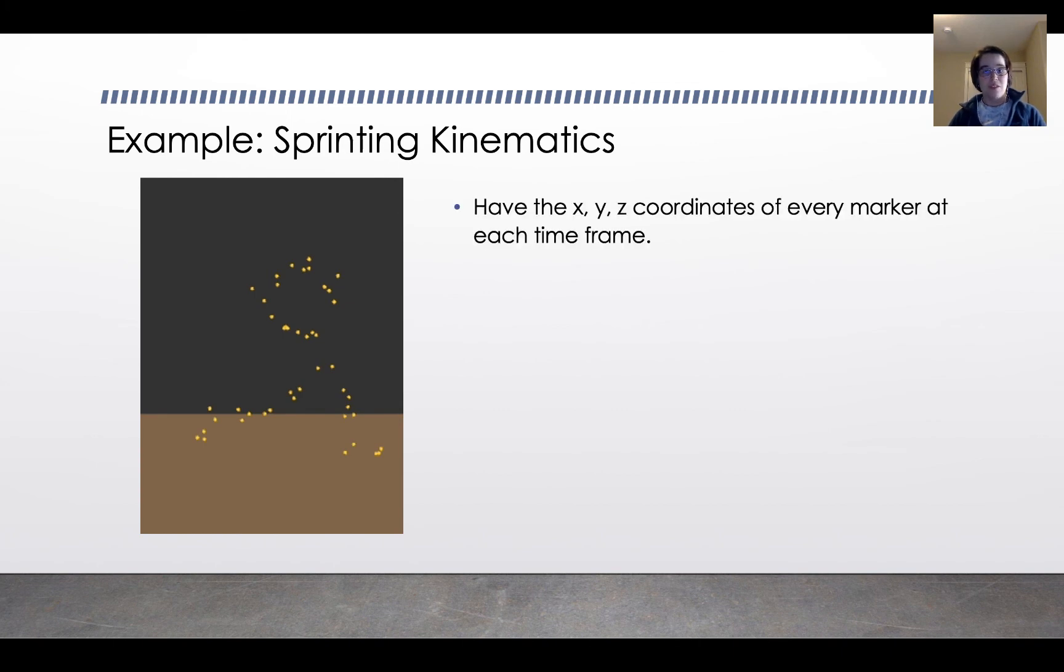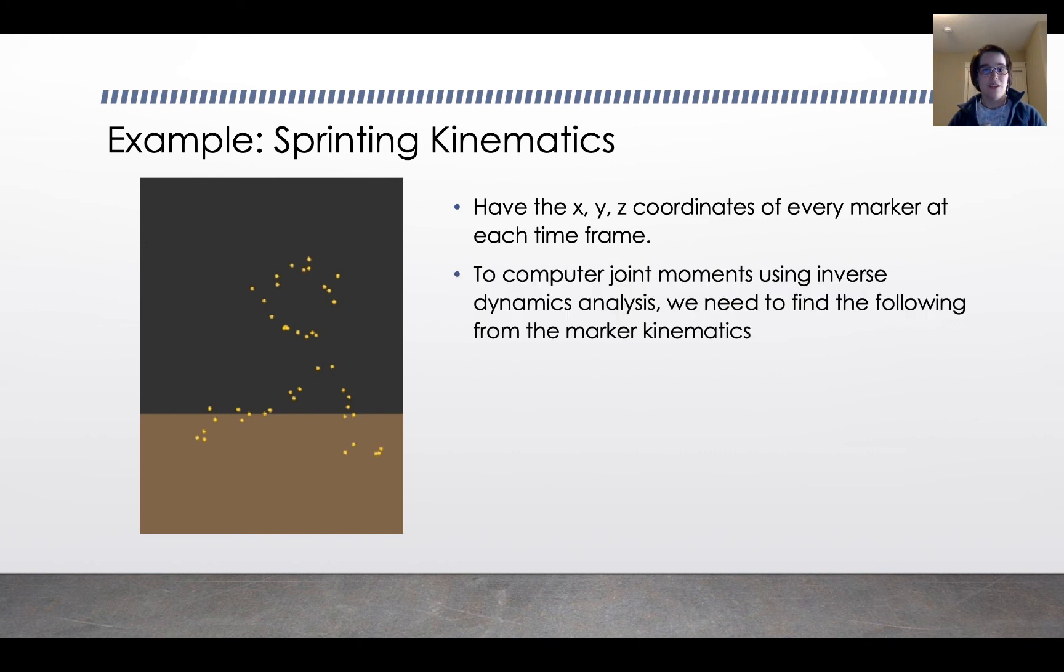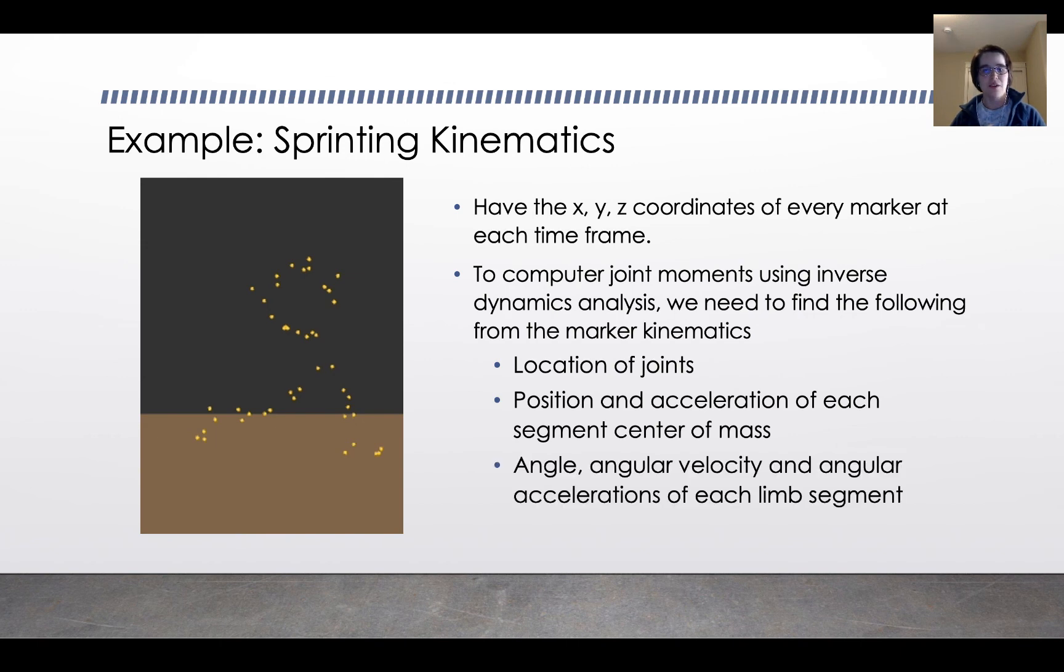What the computer sees is the x, y, and z coordinates at every marker in each time and space. Then to compute joint movements, you use a process of inverse dynamics analysis using the statics and dynamics techniques that we've talked about in order to find the following things from the marker kinematics, from the positions of the markers over time. You find the location of the joints, the position and acceleration of each segment and its center of mass, and finally the angular position and velocity and acceleration of each of the limb segments. Using those things with some more complicated models, you can back out some useful information from your model.